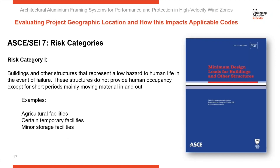ASCE-SEI-7 has different wind speeds based upon what the risk factor is for each project, so it's critical that we get the correct risk category and appropriate wind speed maps. If you have concerns about determining the category, do get in touch with the local authorities because they're going to be the ones who can help you out best with that.